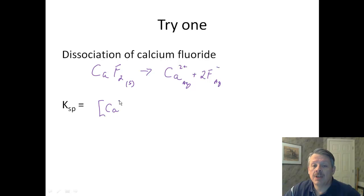So we have the concentration of calcium, which has a 2-plus ion, and the concentration of the fluoride ion, which of course is squared because of the two-coefficient in front of fluorine.